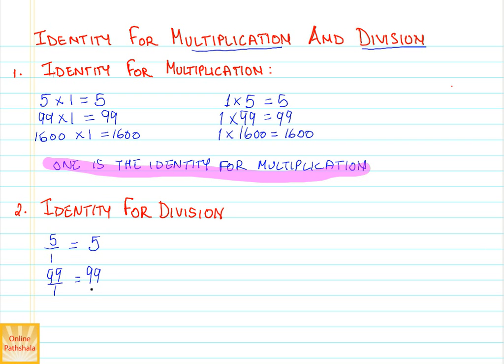This way, it holds true and it looks to be that 1 might be the identity for division. But wait a minute, what happens when I divide 1 by 5? The result is not same. It will be another number.